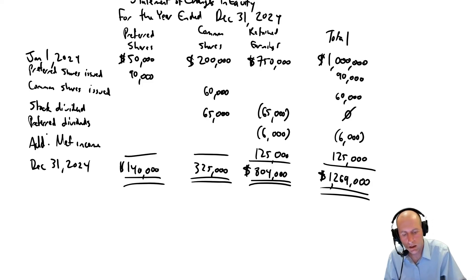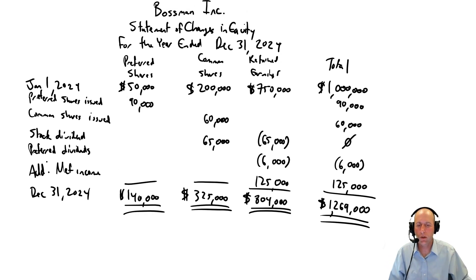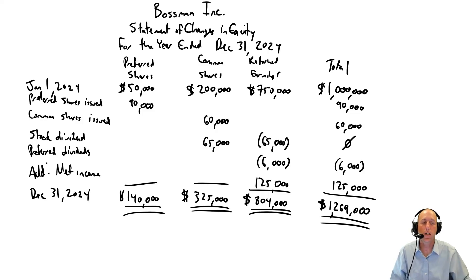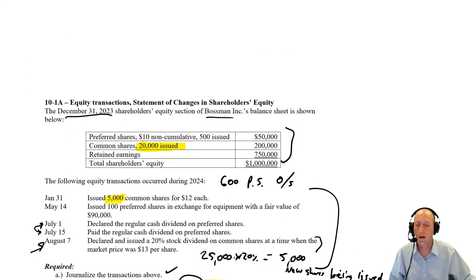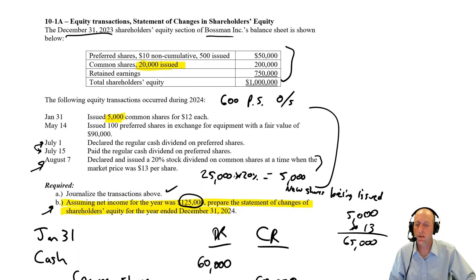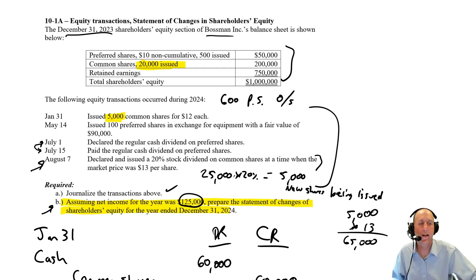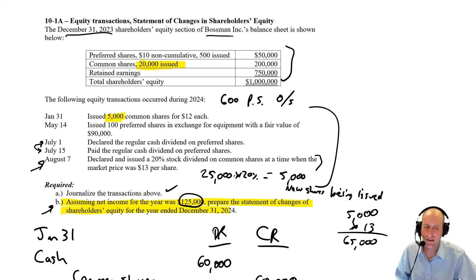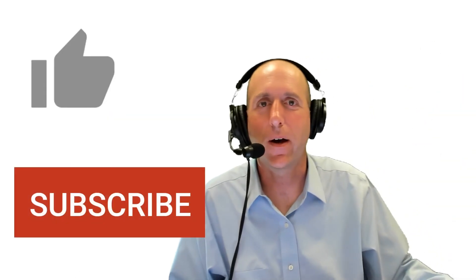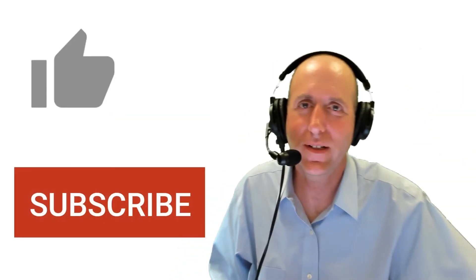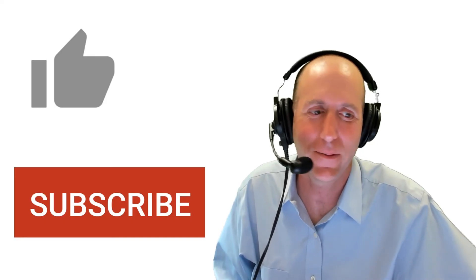We have completed our statement of changes in equity for Bossman Inc. and done all the relevant journal entries. Problem 10-1-A is done. If you made it to the end of the video, I'd love a like. Hope this helped — talk to you soon, bye for now.